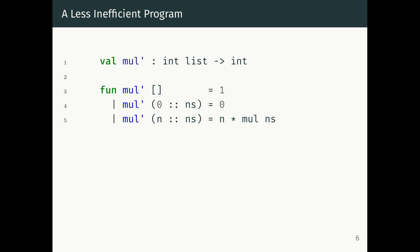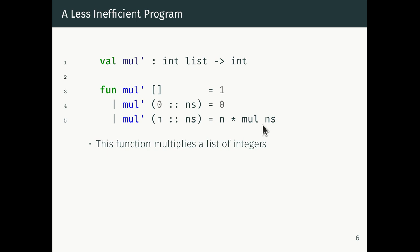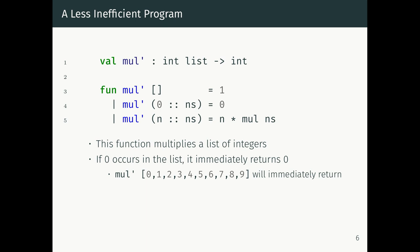We'd add: if we see an empty list, return one as before; if we see zero at the front, immediately return zero; otherwise, if the head is not zero, carry on doing the multiplication as before. So mul-prime will immediately return if called on the list [0,1,2,3,4,5,6,7,8,9], saving ourselves nine multiplications. But there's one issue with this function: if we put zero at the end — writing [1,2,3,4,5,6,7,8,9,0] — this function is still going to do a bunch of multiplications, recursing down to the last element, seeing zero, then multiplying by zero nine times back up the chain.